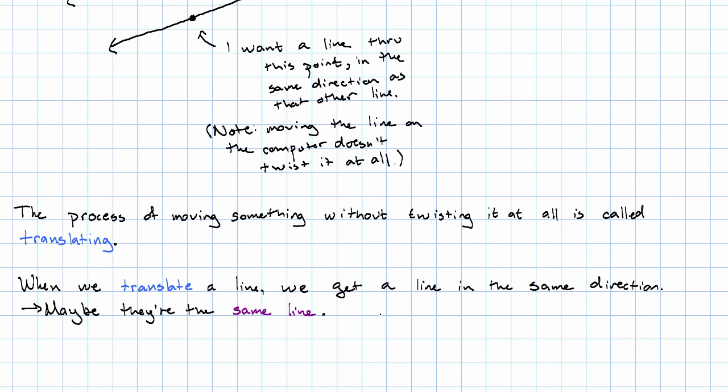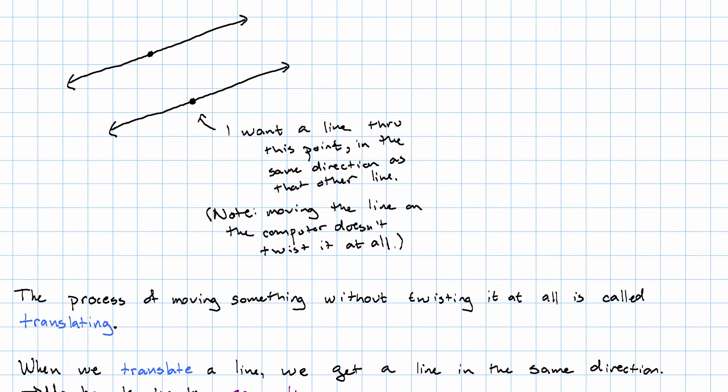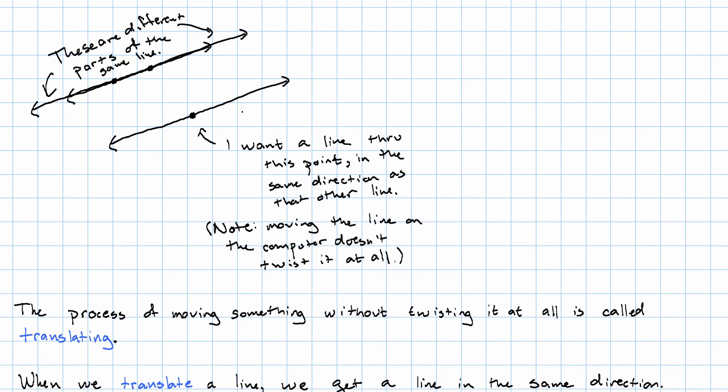Now that leaves two possibilities open to us. Maybe it turns out that we got the exact same line. How could that happen? Well, here I'm going to take this line and I'm going to translate it, but I'm going to keep that point that I'm focused on just right on my line. You see that these are just different parts of the same line. Remember the line itself extends forever in both directions. So maybe when I translate a line, I just get the same line again.